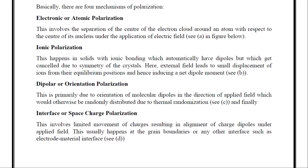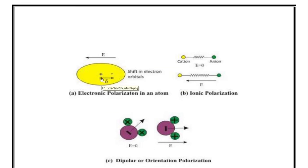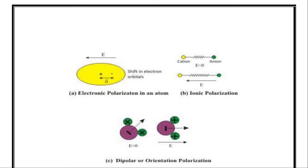Looking at the diagram: the center of positive charge and the center of negative charge are shown. Without an external field at equilibrium, these two charge centers are at the same point. When we apply an external electric field, there is a separation of the two charge centers by a distance delta, creating an electric dipole — this is electronic polarization. For ionic polarization, the anion and cation are displaced by the applied field, causing a charge separation between positive and negative ions.